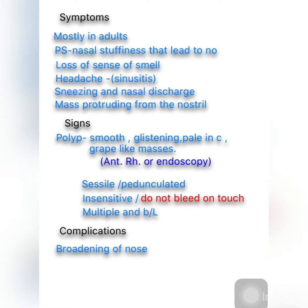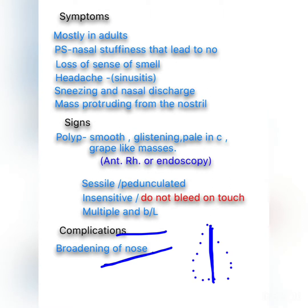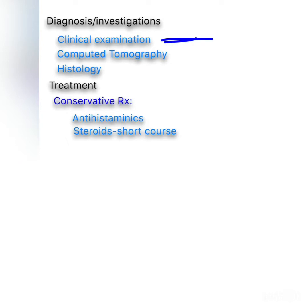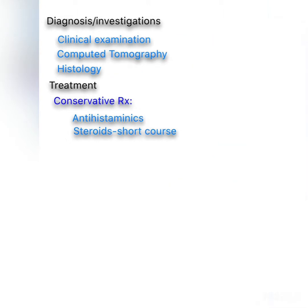Complications in long-standing cases include broadening of the nose with increased intercanthal distance. For diagnosis, clinical examination is used along with CT scan of paranasal sinuses, which is essential to exclude bone erosion. Histology is performed if any neoplasm is suspected, and CT also helps plan surgery.